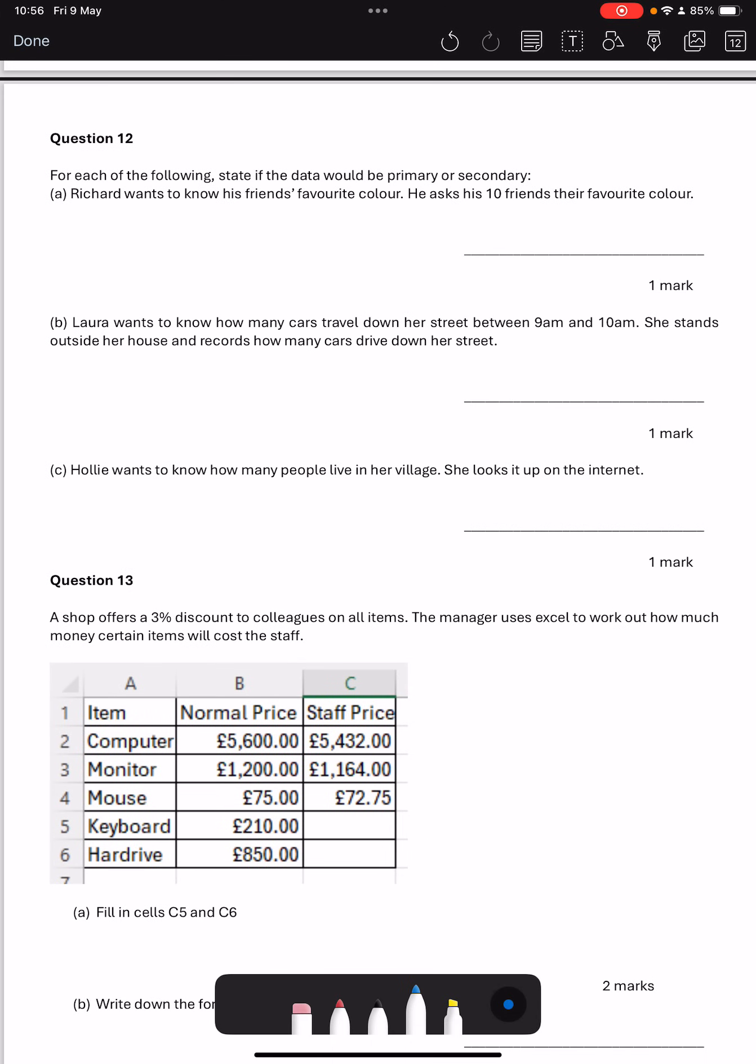Question 12. For each of the following states, the data would be primary or secondary. Primary basically means that you collect the data yourself or the data that you're using has been collected for the same purpose that you are using it for. Richard wants to know his friend's favourite colour and he asks his ten friends. That's going to be primary. He's found it himself. Laura wants to know how many cars travel down the street between nine and ten o'clock. She stands outside a house and records them. She's collecting it herself. Primary.